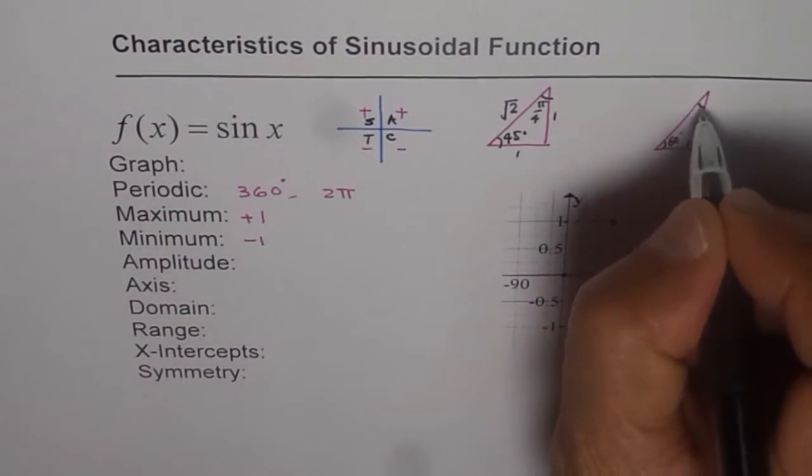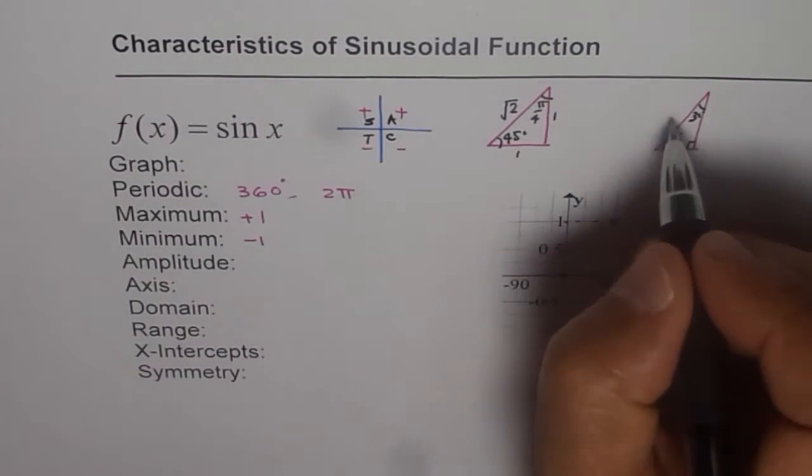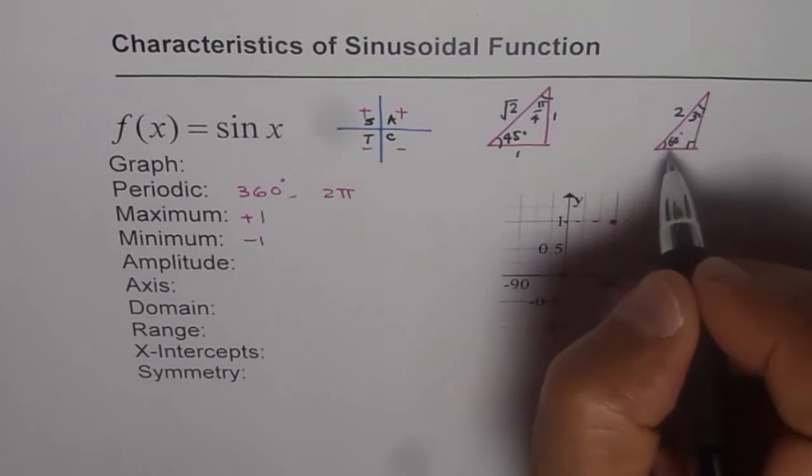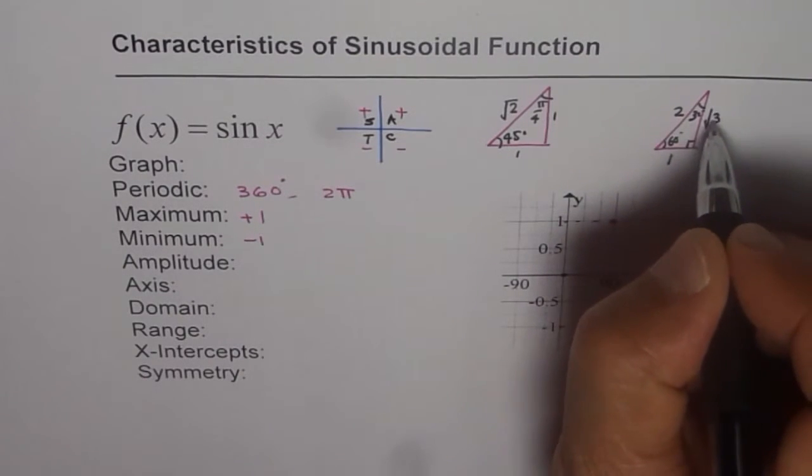But if it is 60 degrees, 90 degrees and 30 degrees, let us consider the equilateral triangle with the sides of length 2. Half that would be 1 and this is 2 square minus 1 square, which is square root of 3.